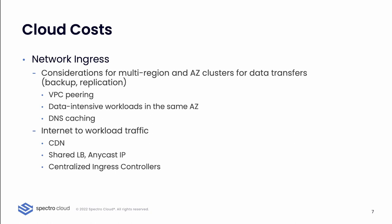Do DNS caching to avoid extra DNS requests from one AZ to another. For internet-to-your-workload traffic, you want to cache as much as possible — put all your static content into a CDN, use shared load balancers with anycast IPs, and use centralized ingress controllers that can redistribute traffic internally where appropriate.